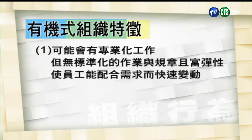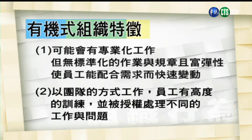一、有机式的组织可能会有专业化的工作，但这些工作并没有标准化的作业及规章，非常有弹性，让员工能够配合需要而快速变动。第二，这类组织常常以团队的方式来进行工作，员工有高度的训练，而且被充分授权处理不同的工作与问题。